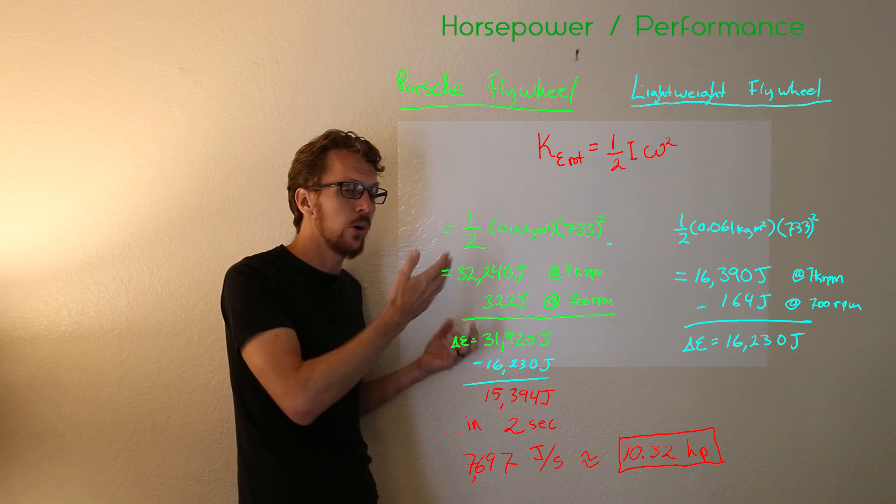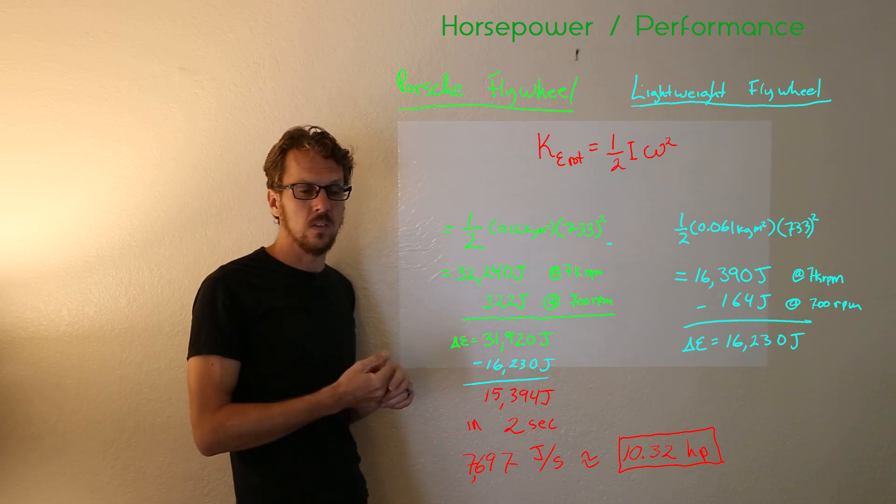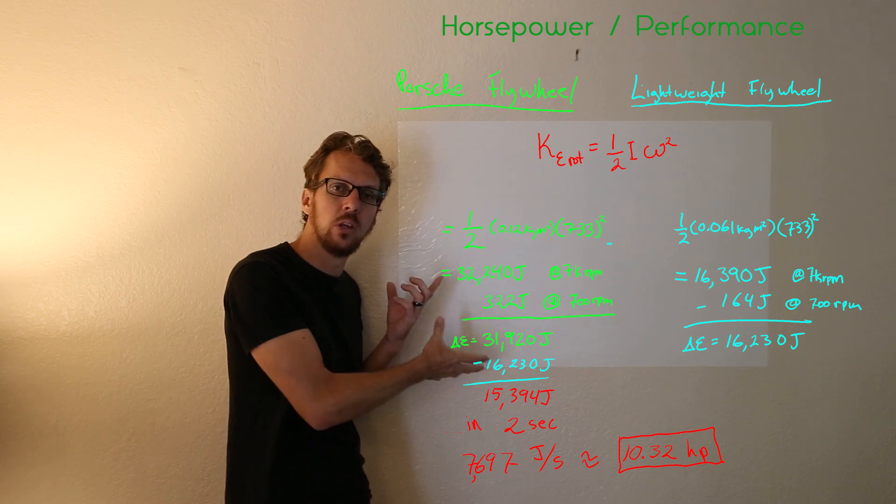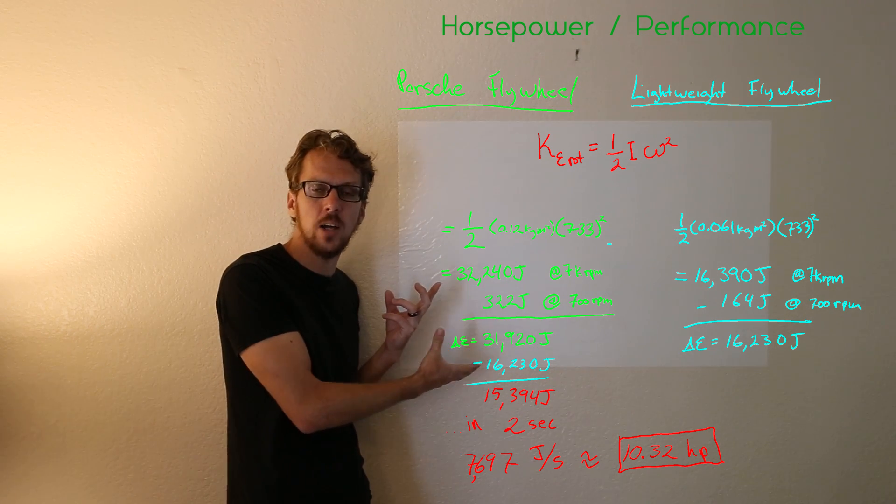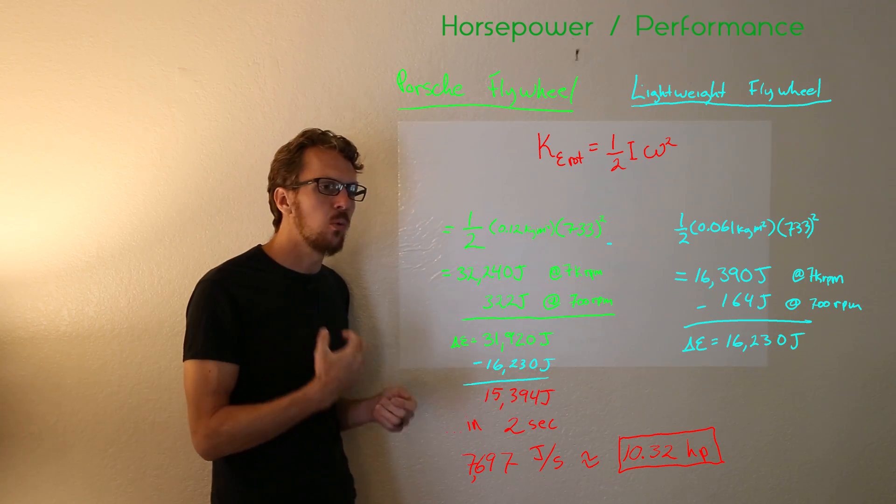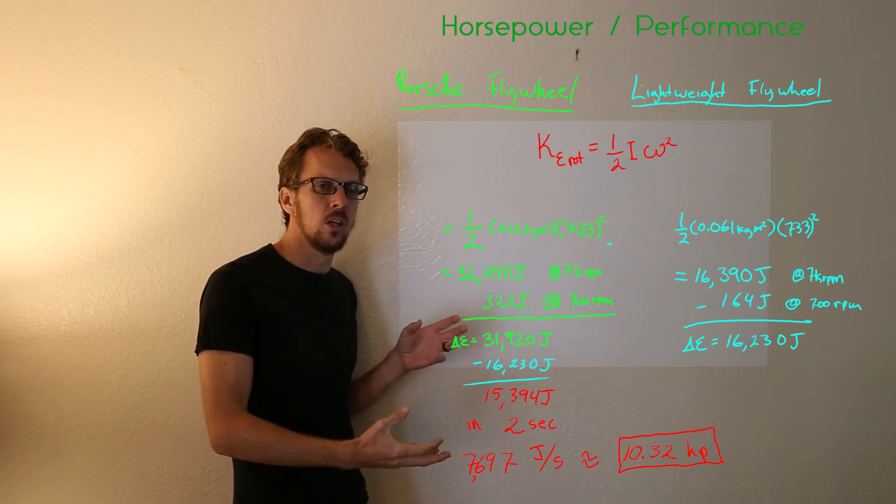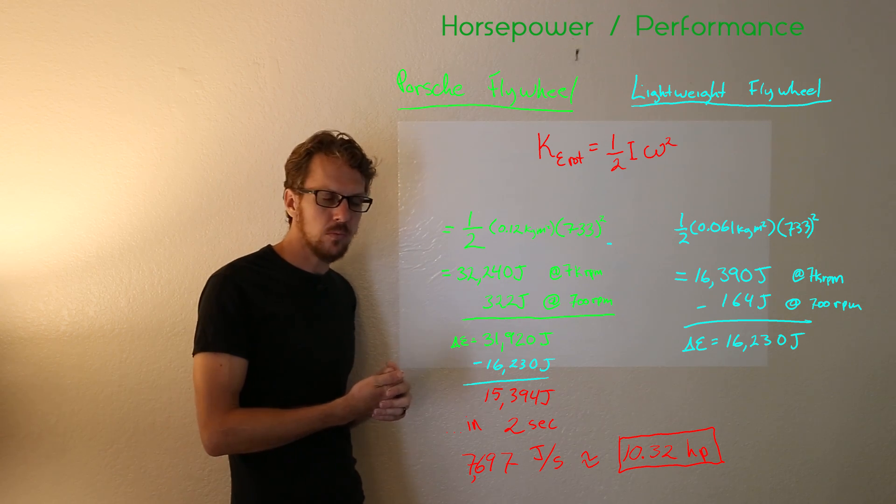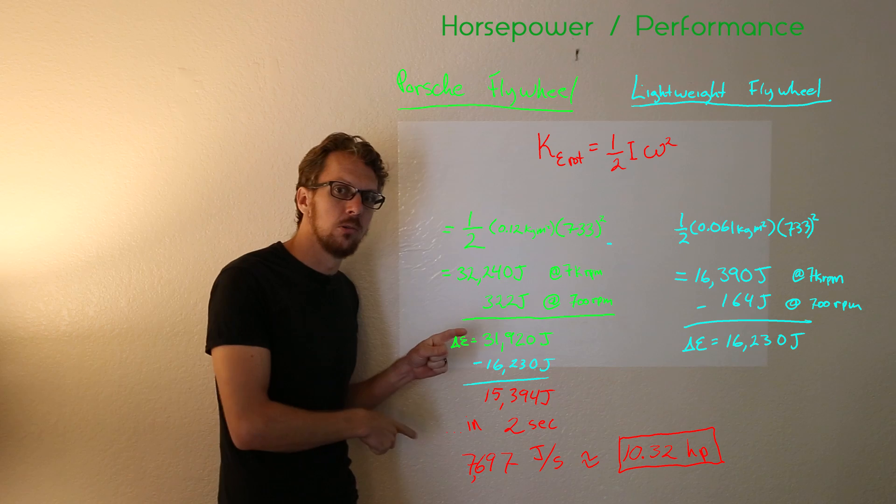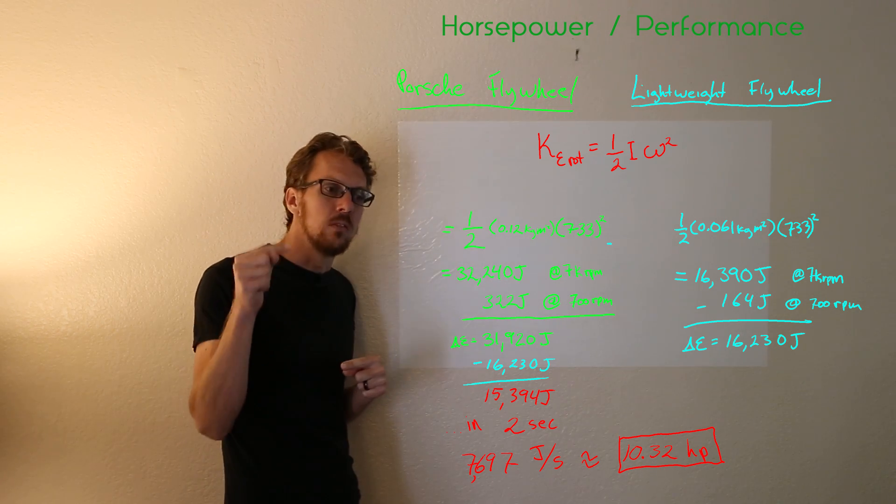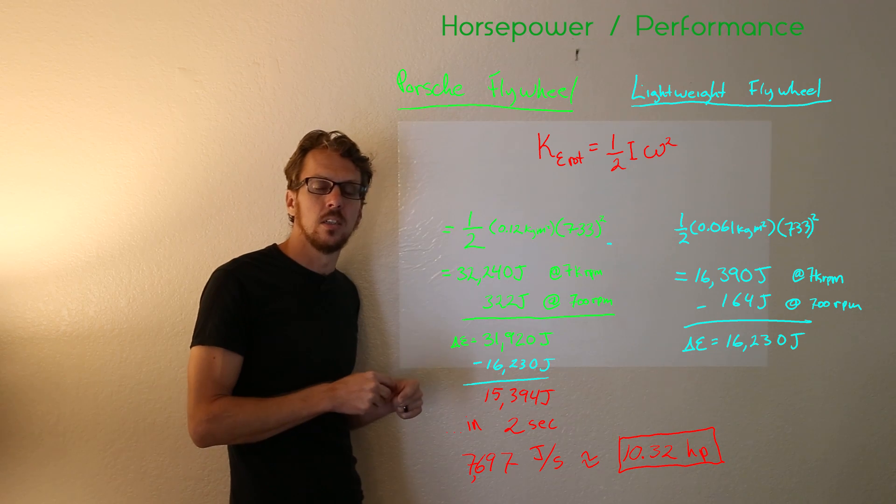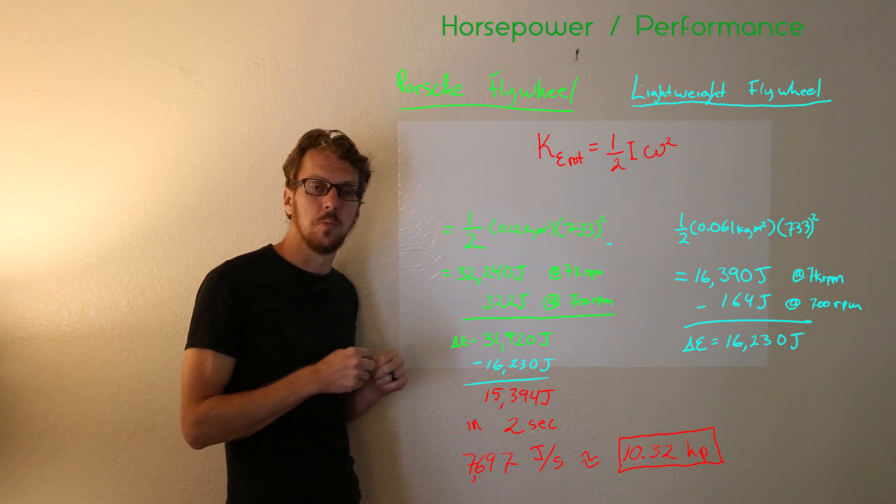All the same it does show that under certain circumstances the power that goes into spooling the heavier Porsche flywheel is significant. And when you look at this math you might wonder why anyone would choose the heavier Porsche flywheel over the lightweight aluminum one. So what we'll go into next is why Porsche chose such a heavy dual mass flywheel over the lightweight aluminum one.